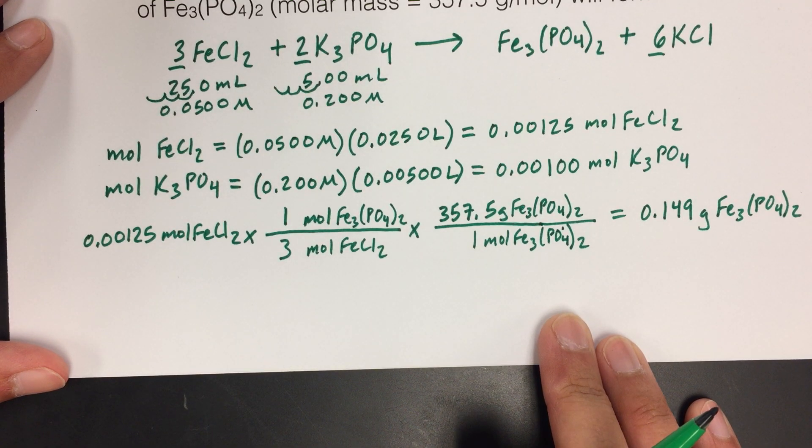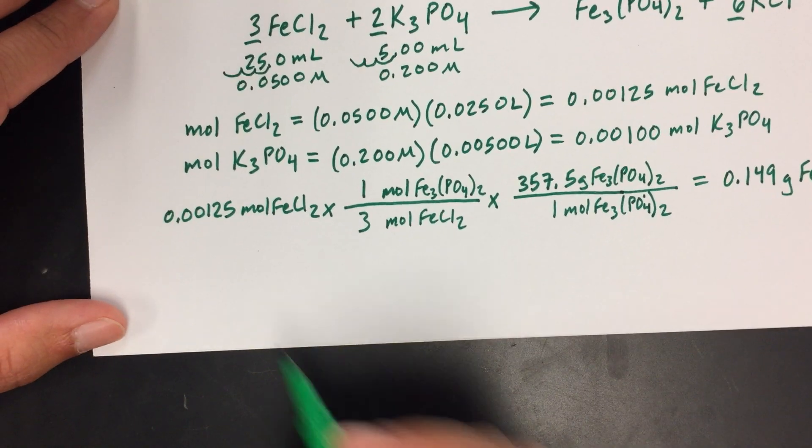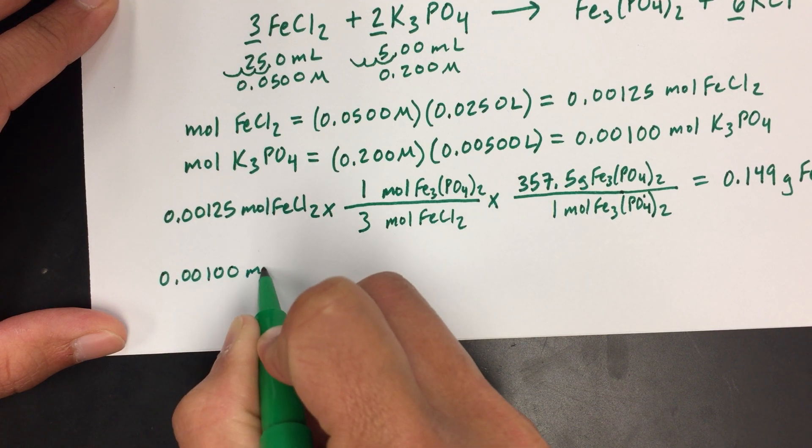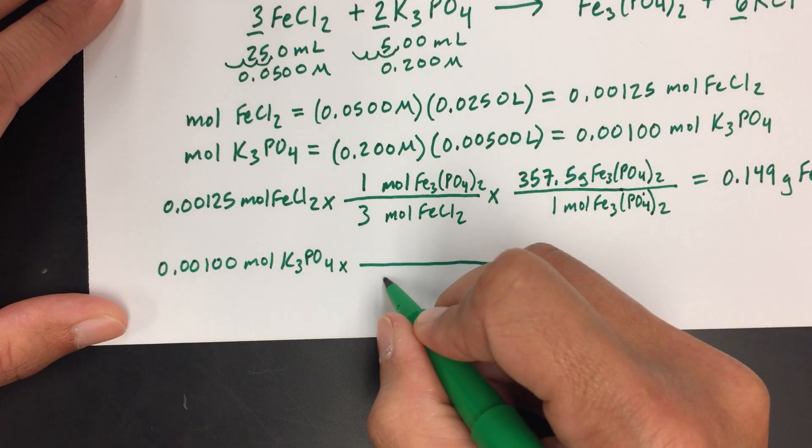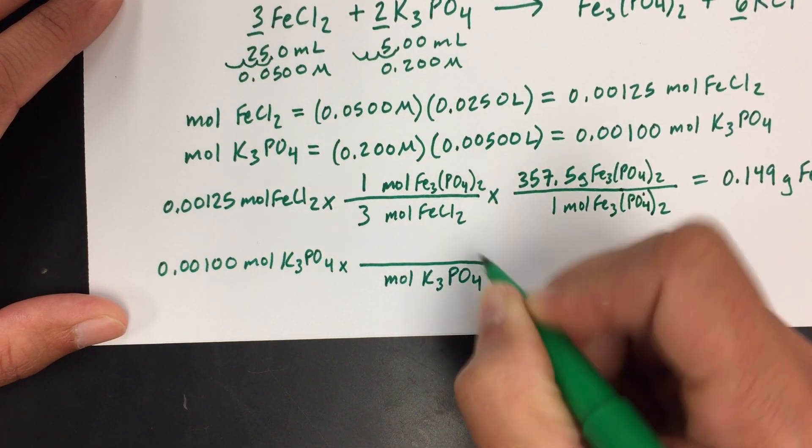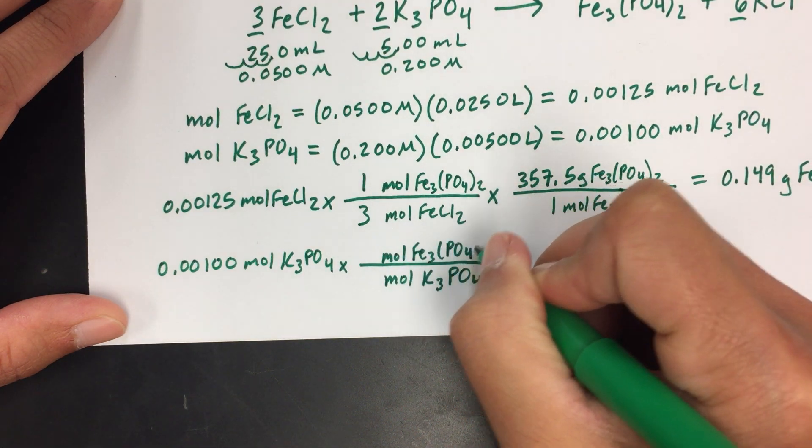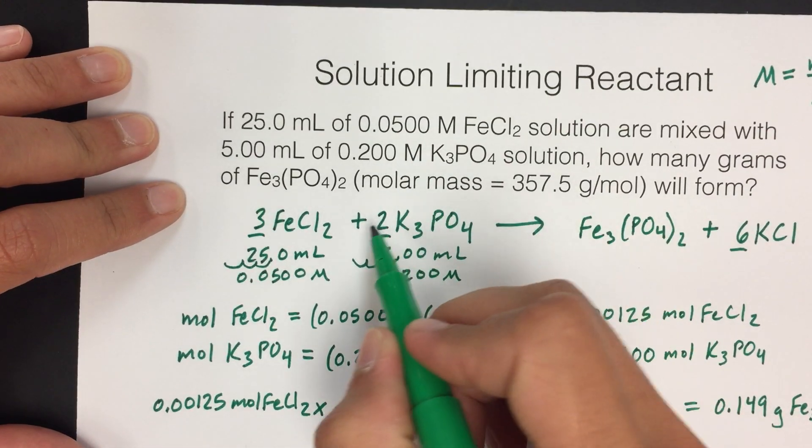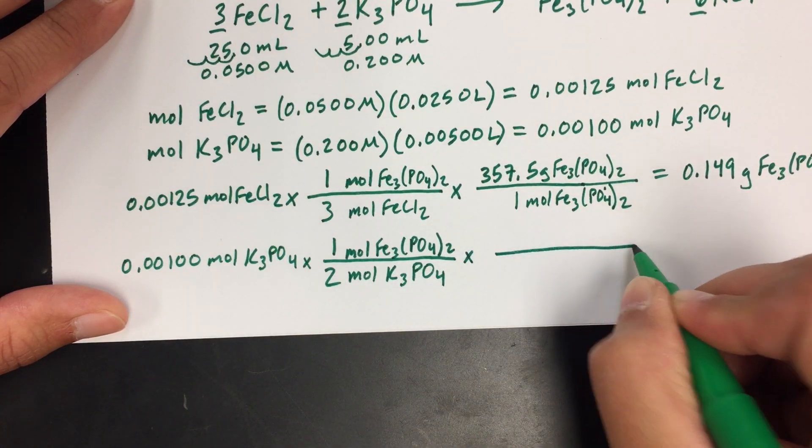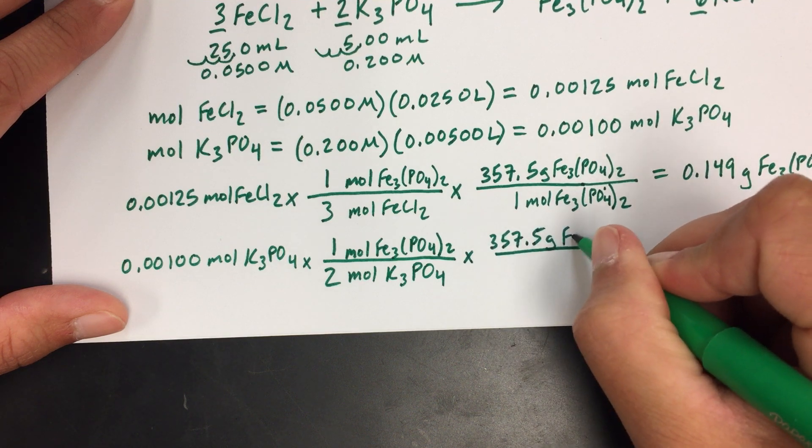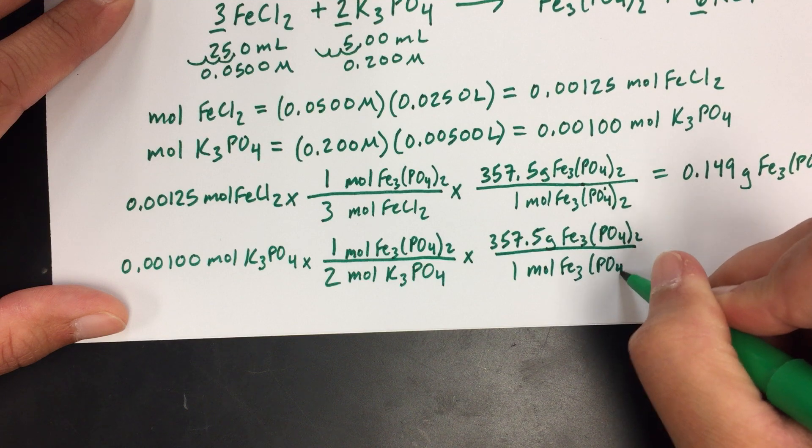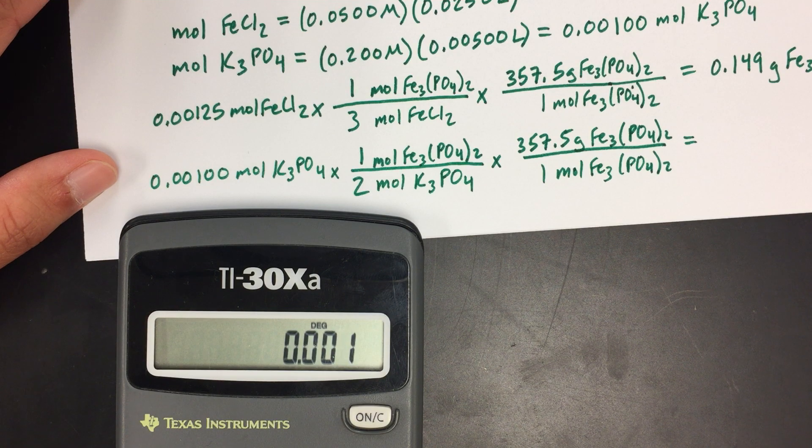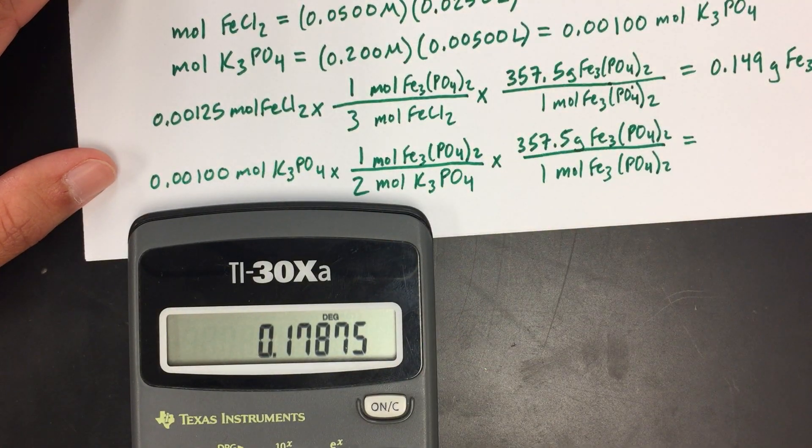We're not done. We need to check the other one to see how many grams of product could be made with the moles of potassium phosphate. So we're going to do another problem starting with 0.00100 moles of K3PO4. First, we want the mole ratio. Potassium phosphate is 2 and iron phosphate is 1. And then this conversion will be the same using the molar mass. With three sig figs again because this number has three sig figs, we'll get 0.179 grams of Fe3(PO4)2.